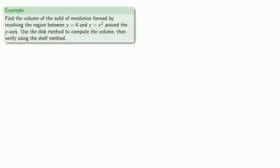So let's take an example. Suppose we want to find the volume of the solid of revolution formed by revolving the region between y equals 4 and y equals x squared around the y-axis. We'll use the disk method to compute the volume, and then verify using the shell method. So first of all, let's actually graph the region.